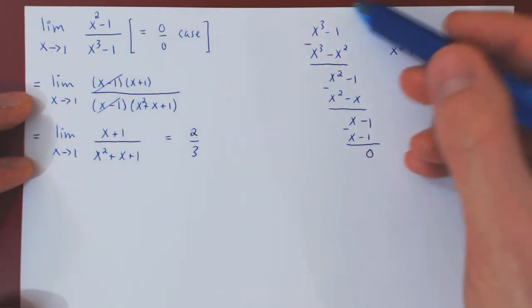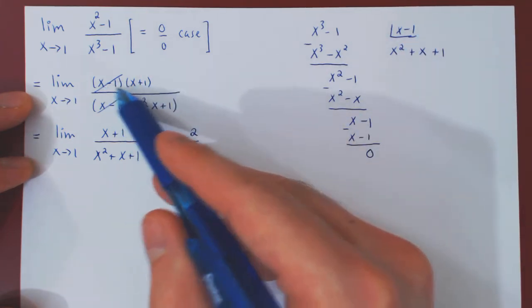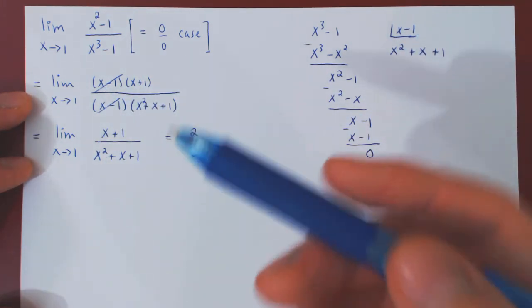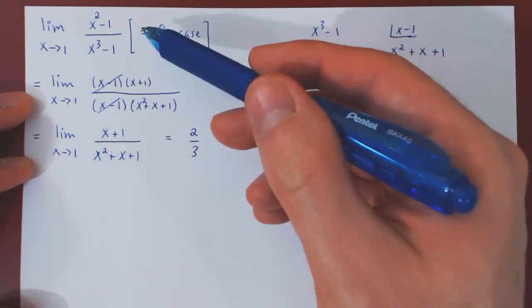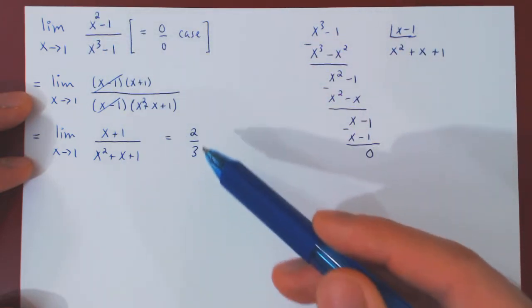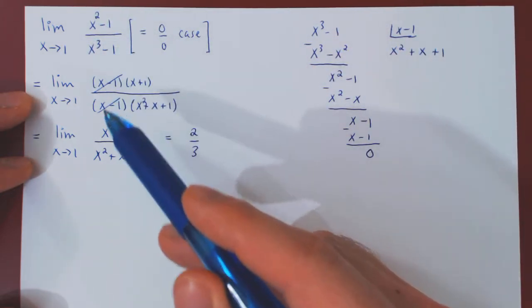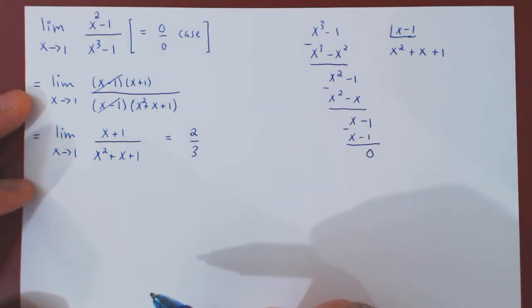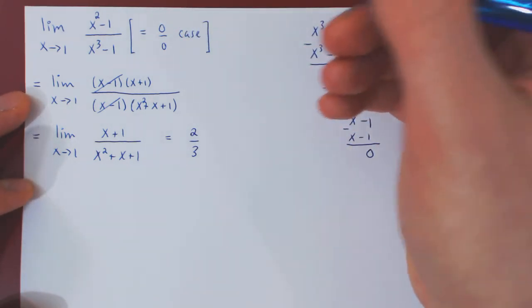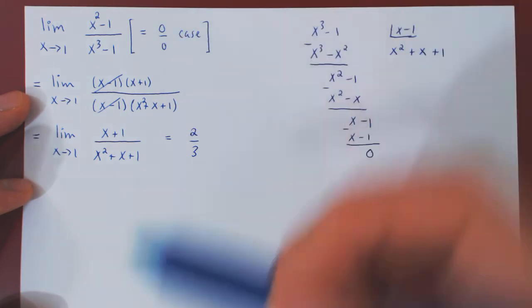Using the elementary method of factoring the polynomials. Well, let us repeat now, but instead of finding the limit using factoring, let us find the limit using L'Hopital's rule as it is applicable since we have a 0 over 0 case.